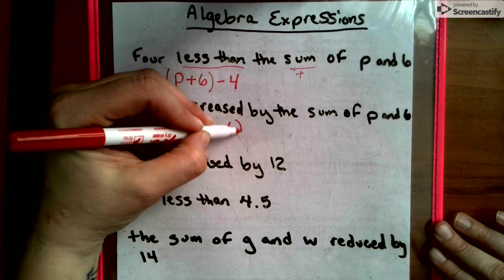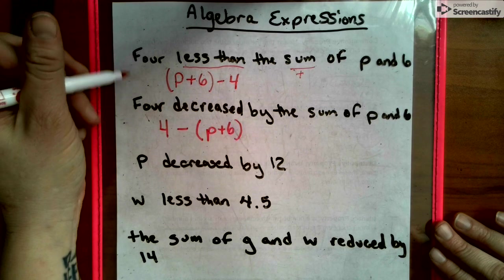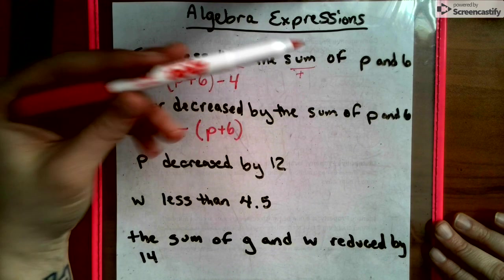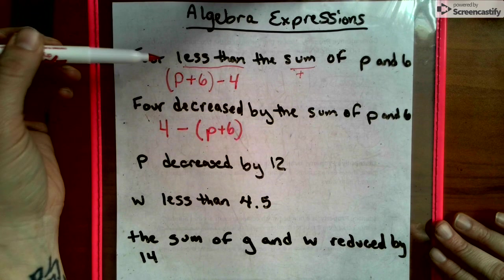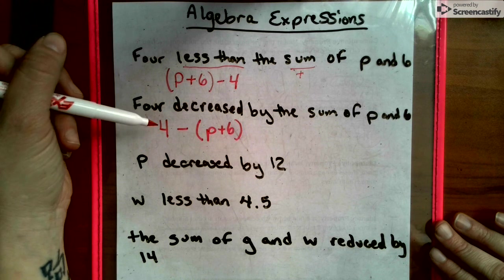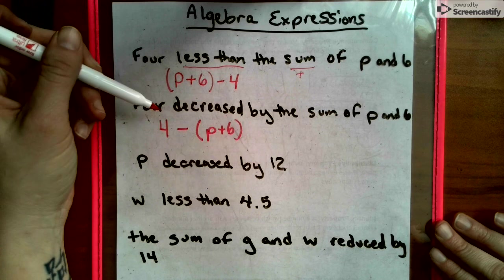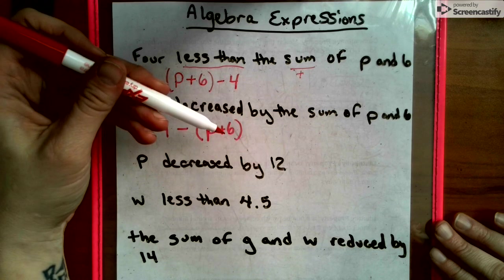This is a situation where the 4 would come first. Now listen to how those sound. 4 less than the sum of this - we have to have the sum before we can take 4 less. Whereas this is, you have 4, decrease it by the sum of P and 6. So we have to have 4 and then take away this answer.